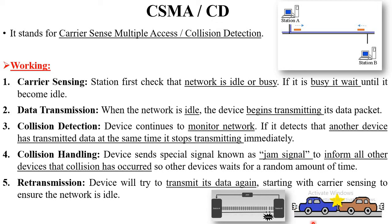Let's take an example. Suppose there are two vehicles using the same road for traveling. These two vehicles use the same road at the same time, so there are chances of collision. This scenario is analogous to how CSMA/CD protocol works.